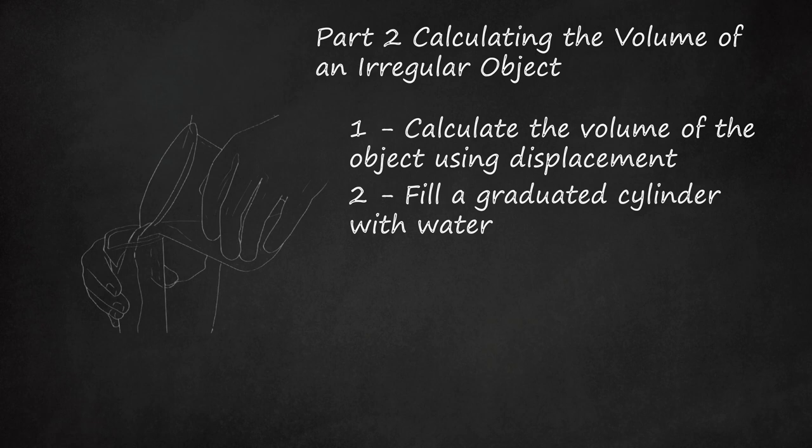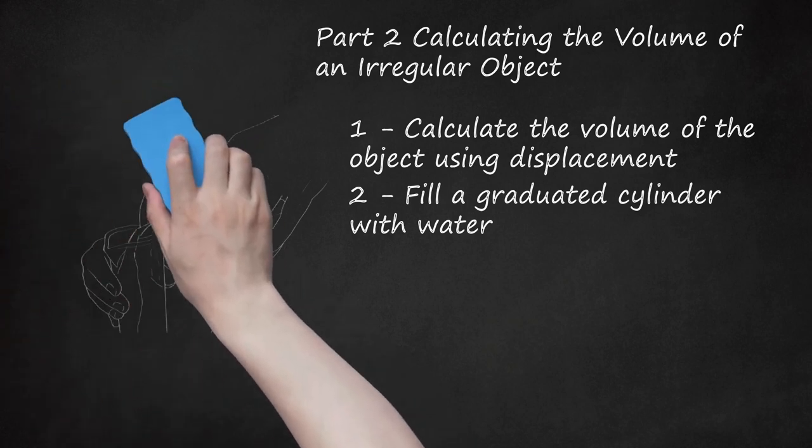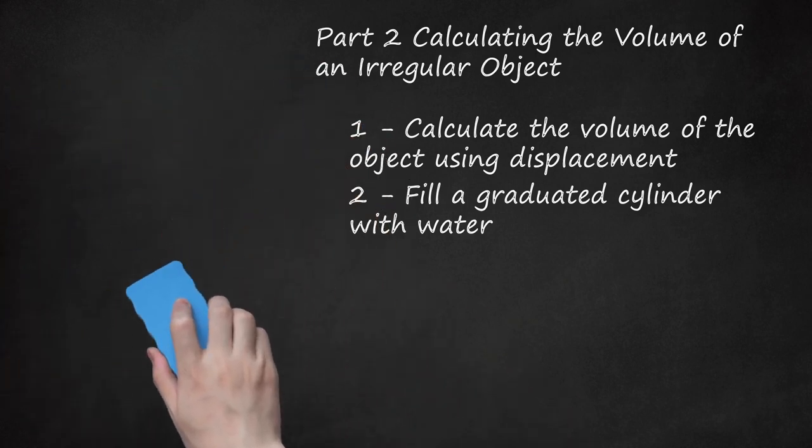You want to fill it with enough water to completely submerge the object, but not overflow. Record the starting water level of the beaker. When you record the starting volume of water, be sure to look at the water at eye level and record the value at the bottom of the meniscus. The meniscus is the curve that the water takes when it comes in contact with another surface.